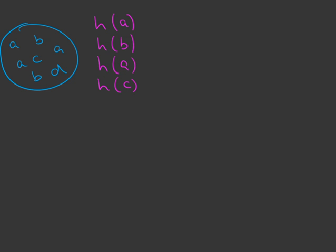It is important that the hash function creates hash values which are uniformly distributed. So hash of A could look like: 1, 0, 1, 1, 1, 0, 1, 1, 1. Hash of B might be 1, 1, 1, 0. Hash of A again gives the same result. Hash of C might be 1, 1, 0. And hash of D might be 0, 0, 1, 1 — something like this. These values are uniformly distributed.